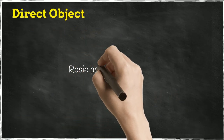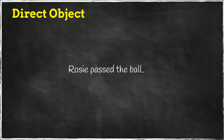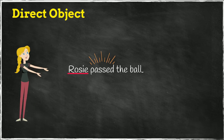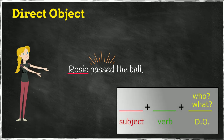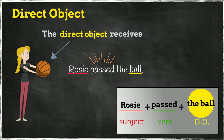Let's take this sentence as an example. To find the direct object, we first find the subject, Rosie, and then the verb, passed. Then we ask, Rosie passed what? Rosie passed the ball. The direct object is the ball. The direct object receives the action from the subject.